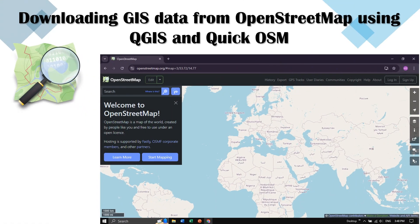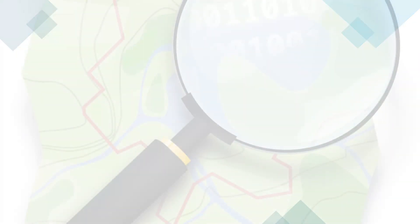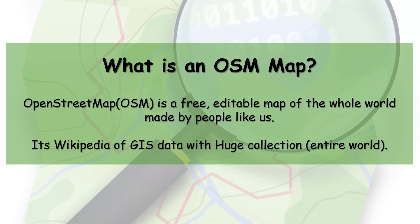Hello everyone, welcome back. In this video tutorial we are going to see how to download GIS data from OpenStreetMap using QGIS and the QuickOSM plugin. So let us have a quick introduction: what is OpenStreetMap? OpenStreetMap is a free, editable map of the whole world made by people like us, with a lot of the general public contributing to this data.